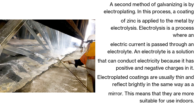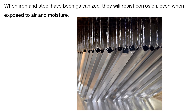A second method of galvanizing is by electroplating. In this process, a coating of zinc is applied to the metal by electrolysis. Electrolysis is a process where an electric current is passed through an electrolyte. An electrolyte is a solution that can conduct electricity because it has positive and negative charges in it. Electroplating coatings are usually thin and reflect brightly in the same way as a mirror, meaning they are more suitable for use indoors. When iron and steel have been galvanized, they will resist corrosion even when exposed to air and moisture.